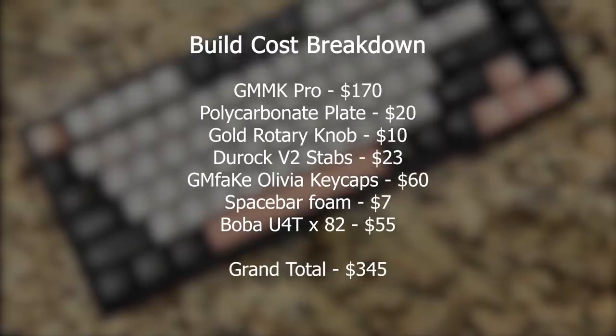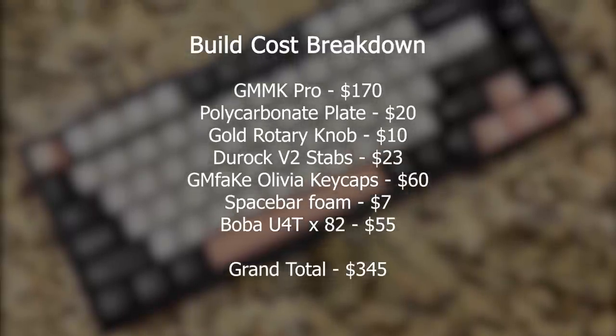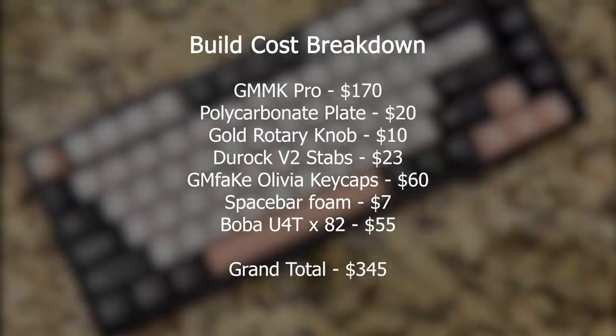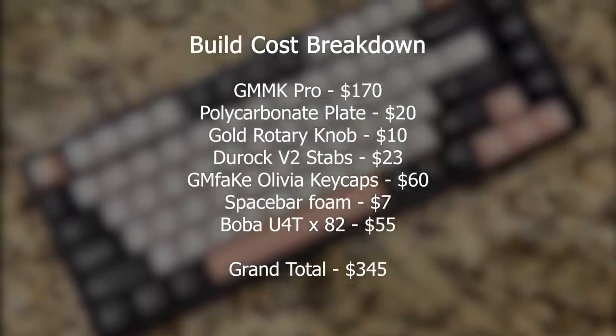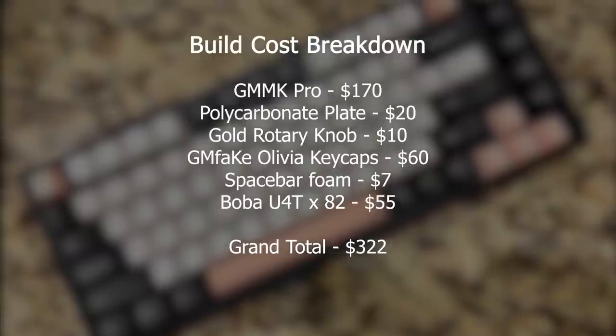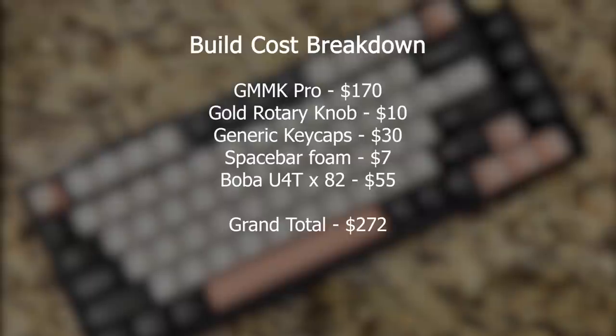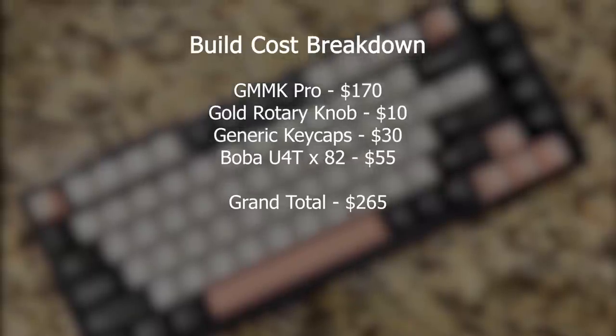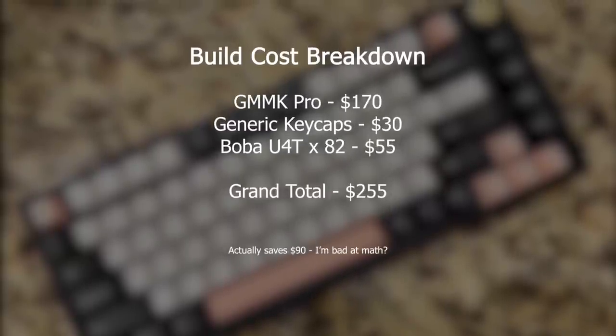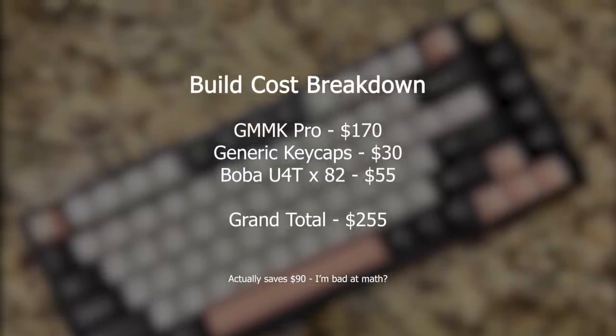All together, I had a good time building the GMMK Pro, and I'm really happy with the way that the build turned out. I think that for $350, this build really does compare favorably with other builds in the same budget. If you wanted to save some more money, I think that tuning the GOAT stabilizers with the Holee mod, using the stock aluminum plate, using some less expensive keycaps without the spacebar foam, and skipping the custom knob would have a similar result while saving you around $70, and that build would definitely be punching above its weight class.